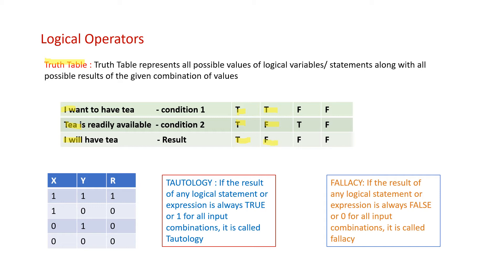In the next case, I don't want tea but it is readily available — condition 2 is true — so even though tea is available, I don't want it, so the result is false. In the last case, I don't want tea and tea is not readily available, so both conditions are false, and since I don't want tea the result is also false.